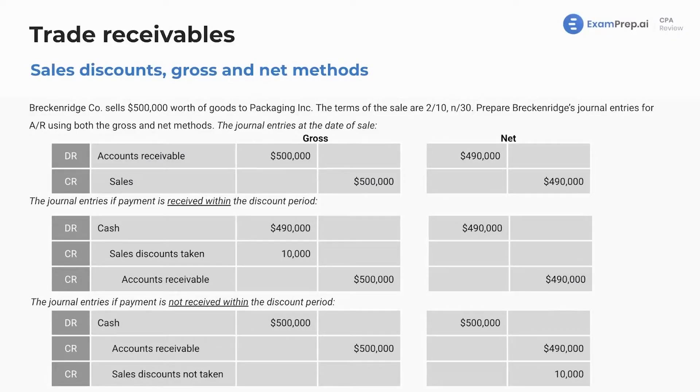Such as this slide — I would say this is much more pressing. Here is us using our journal entries under the gross and net method, so you can see the difference.